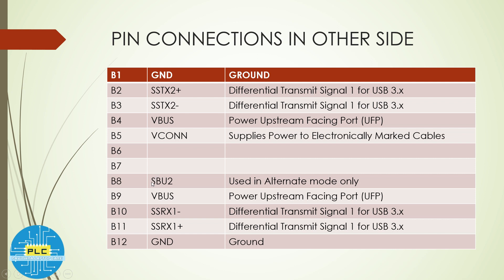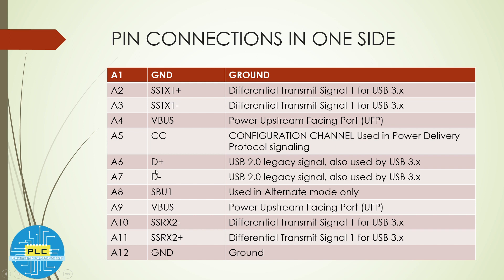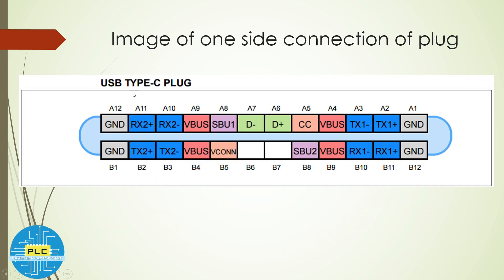If you connect the plug on one side, the other side's data-plus and data-minus won't be active. When you insert the plug into the motherboard Type-C or Thunderbolt port, one orientation is the upper side and the other is the lower side. If you connect the upper side, data-plus and data-minus will be present at that plug point; on the bottom side there will be no data-plus or minus.